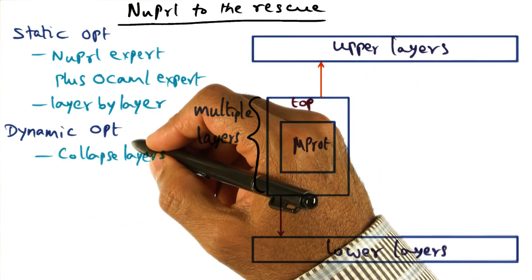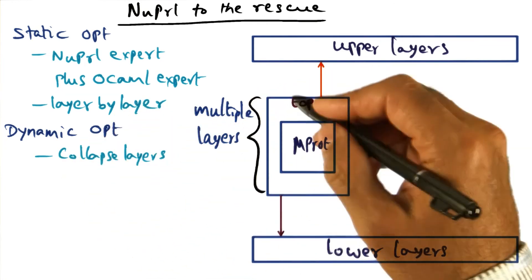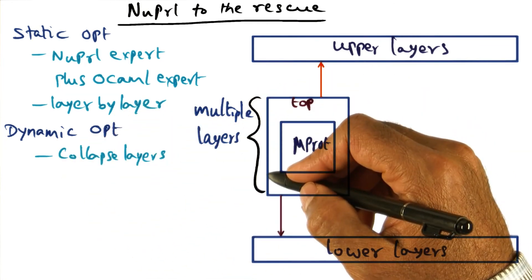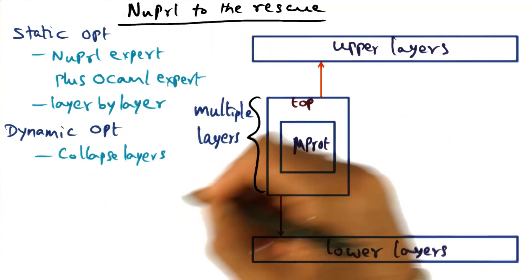So the next step is dynamic optimization, which is attempting to collapse these multiple layers. And it is completely automatic. The previous one I said layer by layer, we're doing in semi-automatic fashion. This is completely automatic,